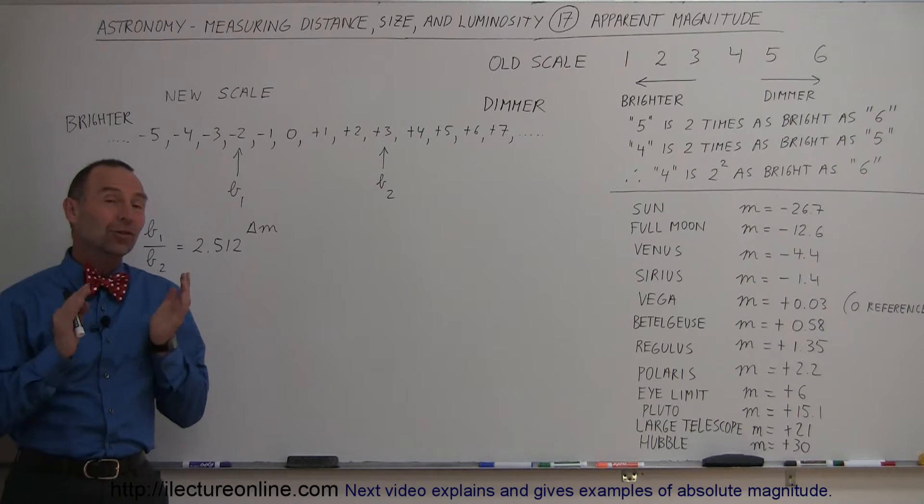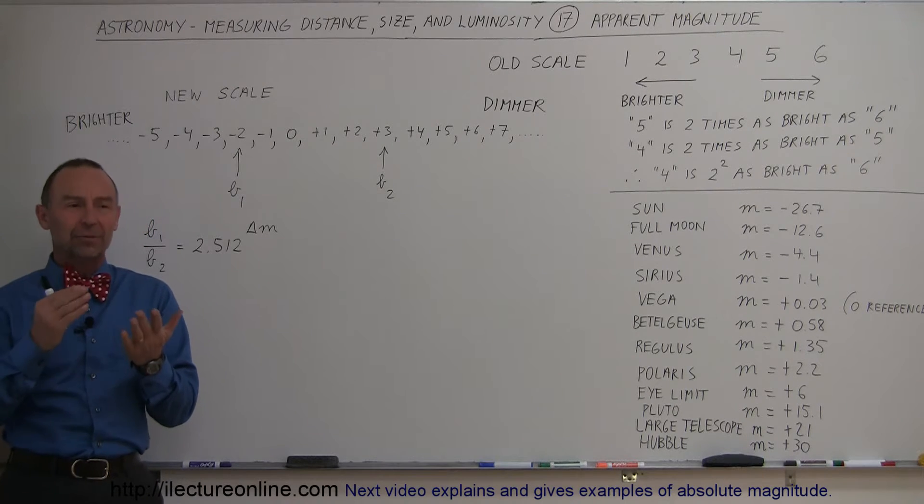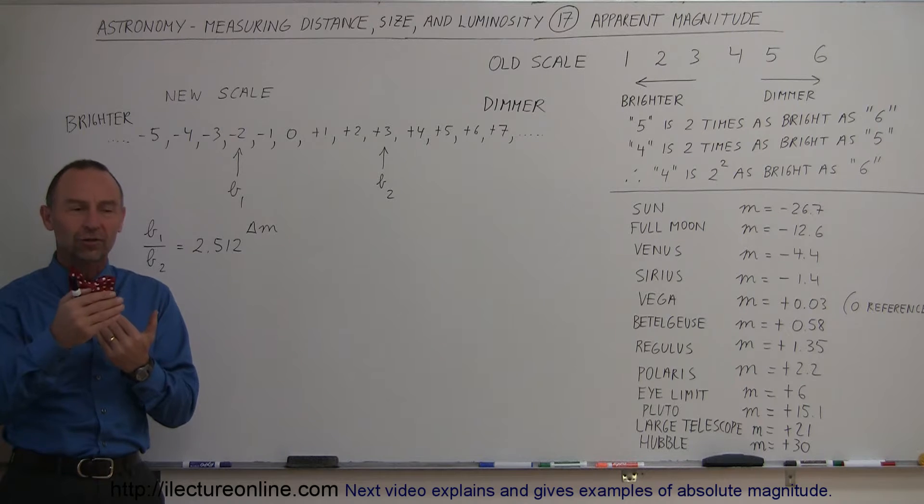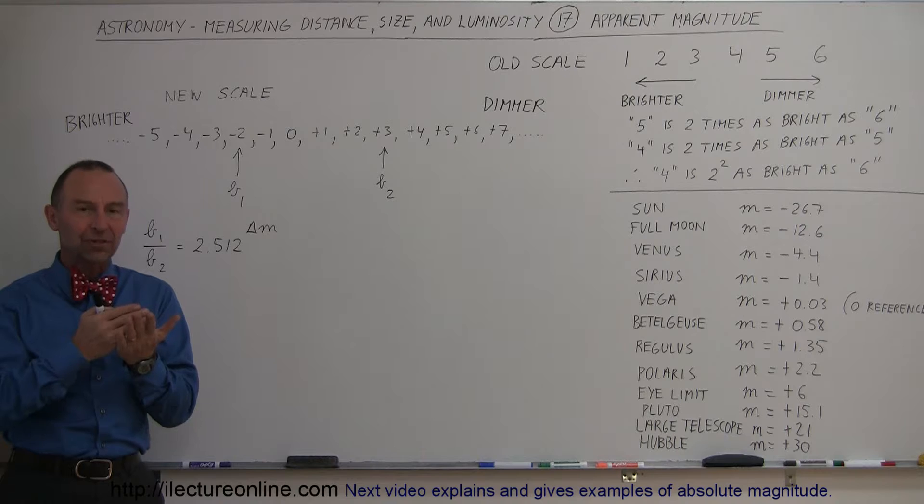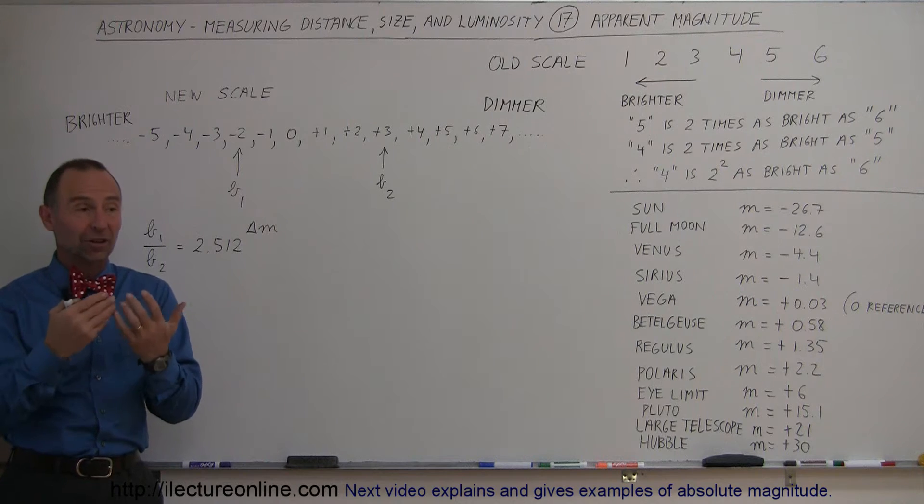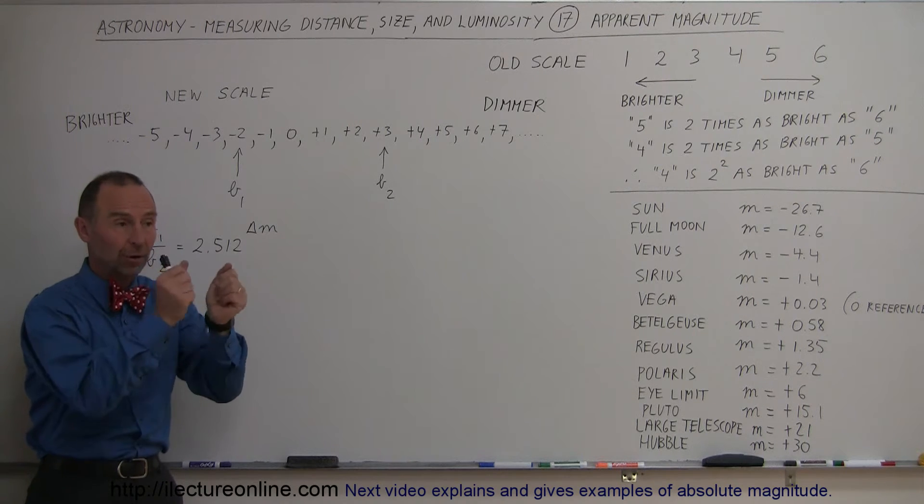Welcome to ElectronLine. In order to understand better how to use the HR diagram to measure distances to stars, we need to come up with a standardized method to establish the luminosity or brightness of stars as it appears to us from our observations.